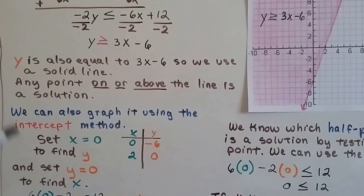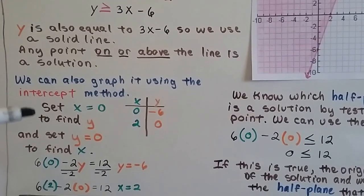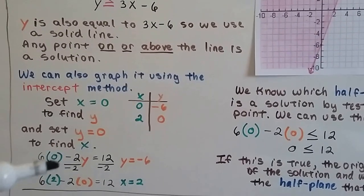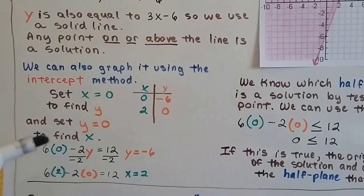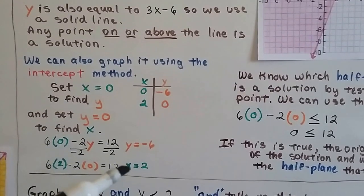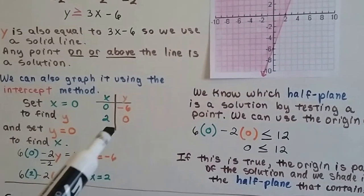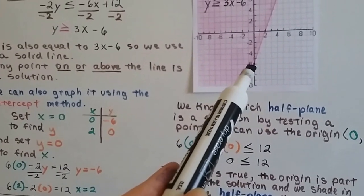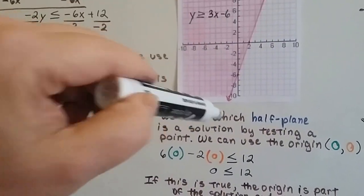We can also graph it using the intercept method, and we can set x to equal 0 and plug it in and find out that y would be -6. So we've got one ordered pair, and we can set y to equal 0 to find x and find out that x equals 2. And now we can plot those two points at the intercepts for y and x and draw our line.